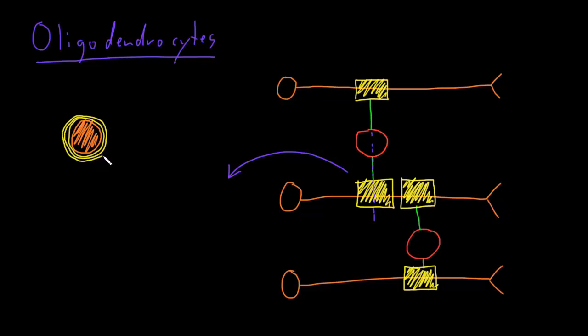And I like to think of these like the rubber coating on a wire kind of insulating the axon. And we'll get into how information is transmitted along axons in other videos, but basically this makes the transmission of information faster and more efficient.